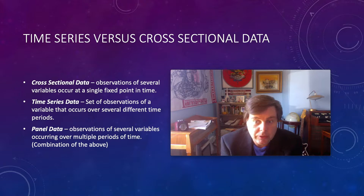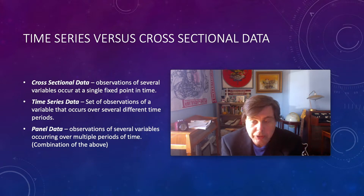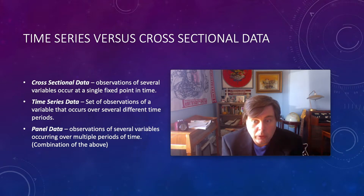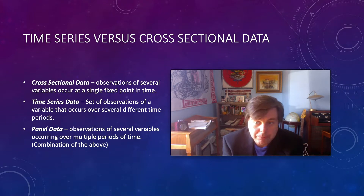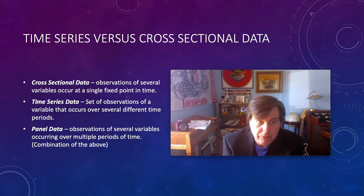Up to this point we've been looking at cross-sectional data, where we have observations of several variables occurring at a fixed point in time. All of our observations were point-in-time, or if there was some variation in time we made corrections to essentially place all observations at some point in time. With this lecture we're going to shift to talking about time series data.